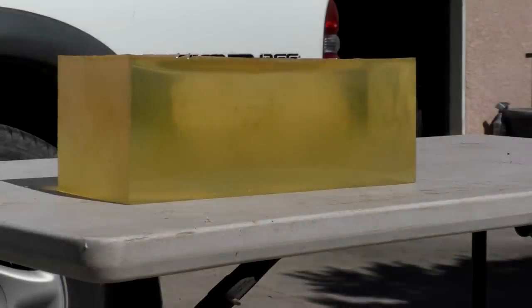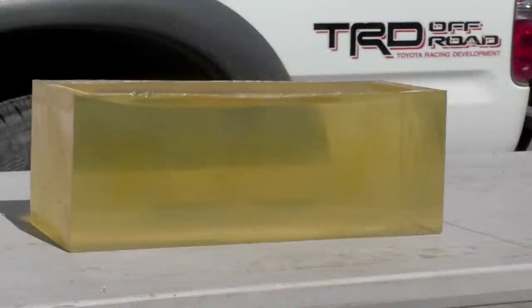Now one thing I did learn was the plastisol block is very resistant to heat. I left this block on this table all day long in nearly 100-degree heat, and it never drooped, sagged, or changed shape. If you were to leave a Clear Ballistics block out in the sun for even an hour in that temperature, it would turn into a puddle.